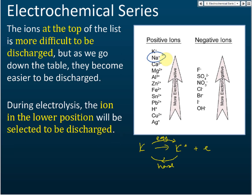For example, we have sodium and hydrogen as positive ions. Hydrogen is lower in the electrochemical series, so hydrogen is selected to be discharged at the negative electrode. For negative ions, we have chloride and hydroxide. Hydroxide is lower in the electrochemical series, so hydroxide will be selected to be discharged at the positive electrode. That is how the electrochemical series affects selective discharge.